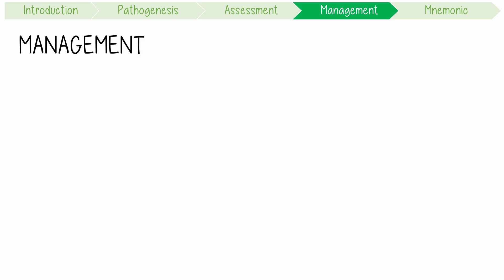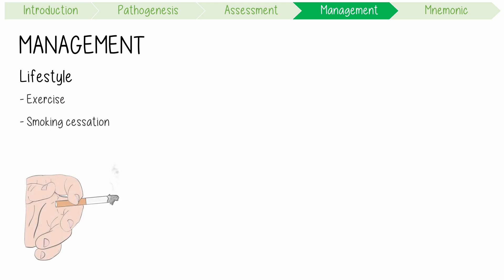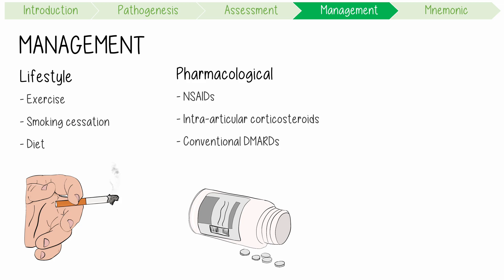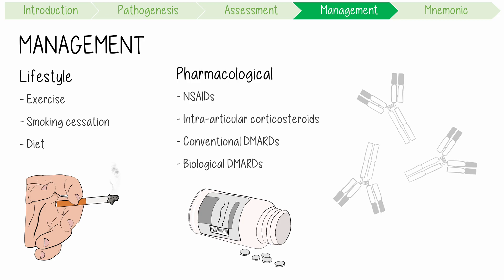Management requires a stepwise approach based on severity and response to treatment. All patients should have help with lifestyle optimization like exercise, smoking and alcohol cessation, and a good diet. Pharmacological measures include NSAIDs like aspirin and intra-articular corticosteroid injections as first-line options. Conventional DMARDs like methotrexate can be used for progressive disease or polyarthritis. Biological DMARDs that target tumor necrosis factor can then be considered if conventional drugs are ineffective or poorly tolerated.